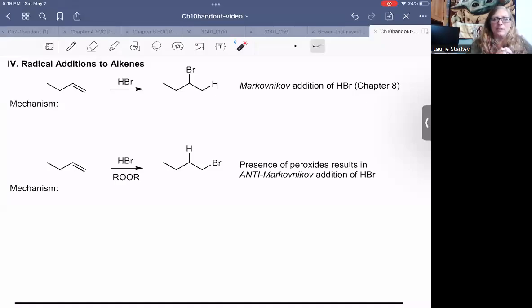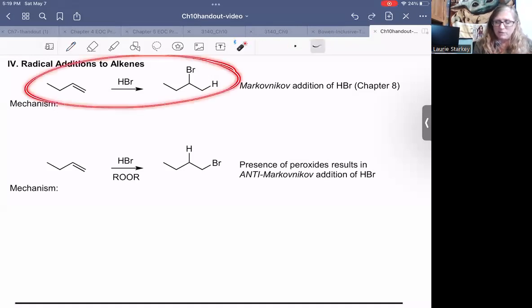All right, we've had an introduction into radical reactions, namely the free radical halogenation reaction. Let's see what would happen if we had a radical reaction with an alkene starting material. And the place we've seen that is addition of HBr to an alkene. Let's first review the original reaction that we saw, the very first reaction we ever saw of reaction of HBr with an alkene.